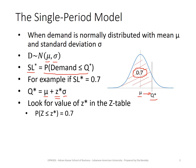I look in the table for a Z star such that P(Z ≤ Z star) = 0.7. Then, with mu and sigma known, I plug in to find Q star — problem solved. I'll illustrate this procedure in the next slide with an example.